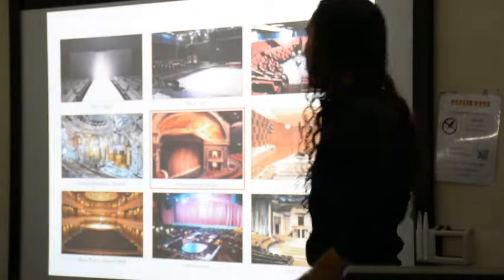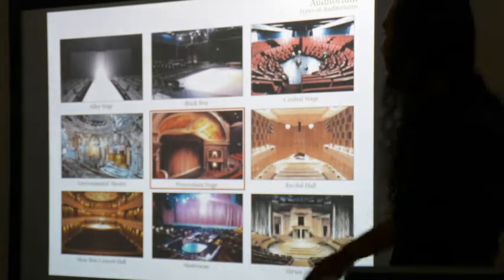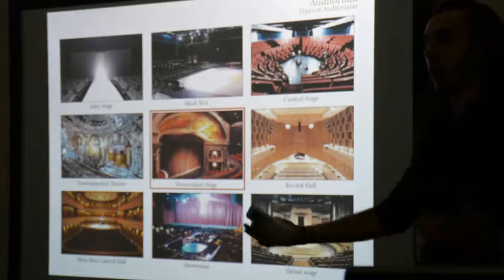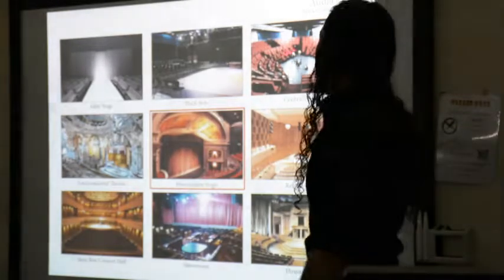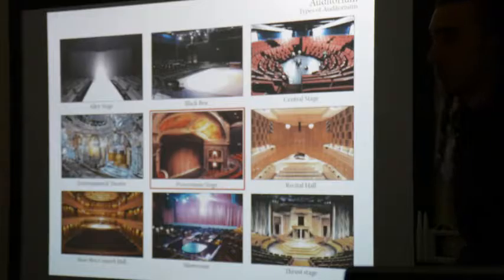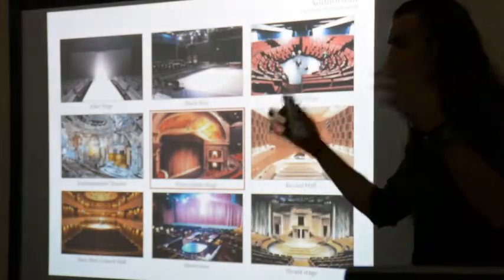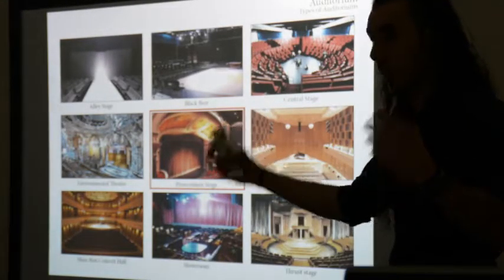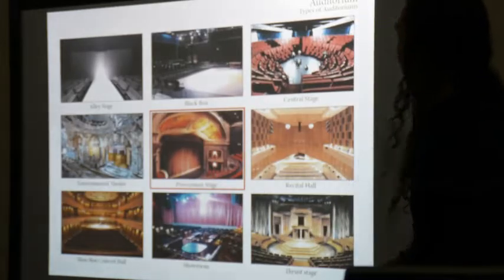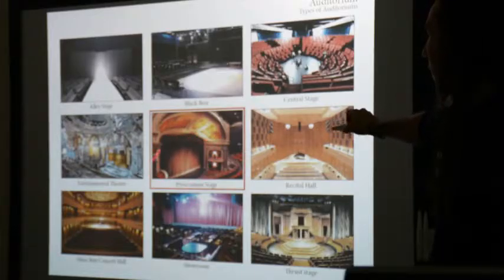There are different types of auditoriums. You have an alley stage, which is pretty much a catwalk like for fashion shows — a long stage with people on either side. Then you have a black box auditorium, which is a flexible big black box. You have a central stage, also known as an arena stage, where you're surrounded completely — used for concerts where every angle is perfect. Environmental theater is where the auditorium itself is part of the act, so if it's a haunted house, the auditorium looks like a haunted house. You have a proscenium stage, which is our main type — proscenium means picture frame, named after the defining picture frame around the stage opening.